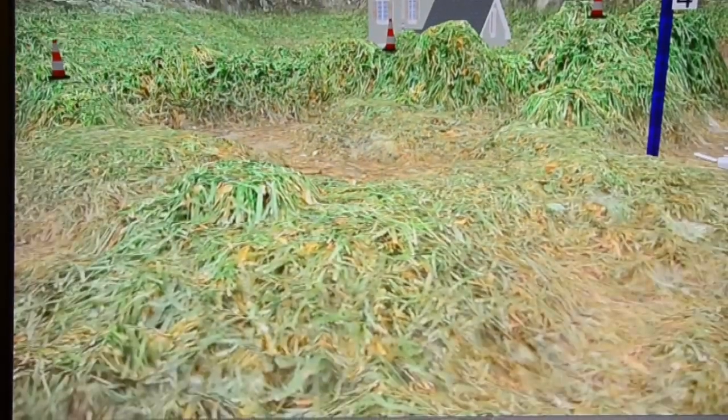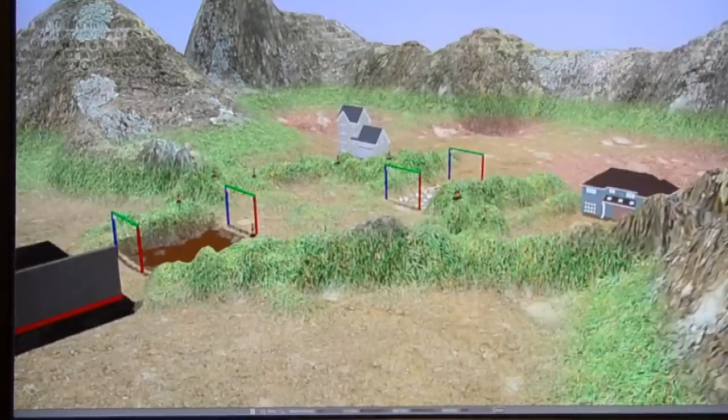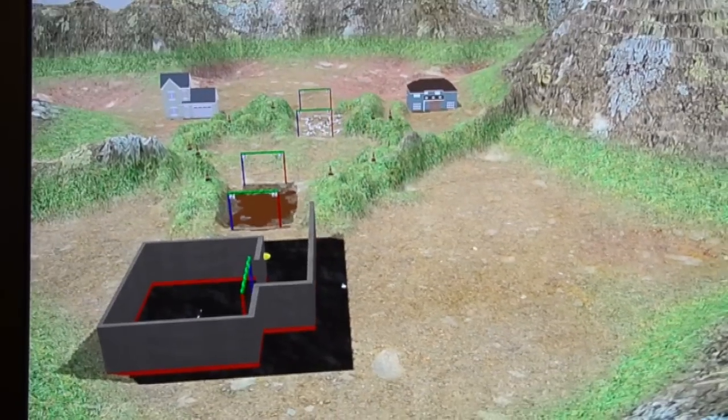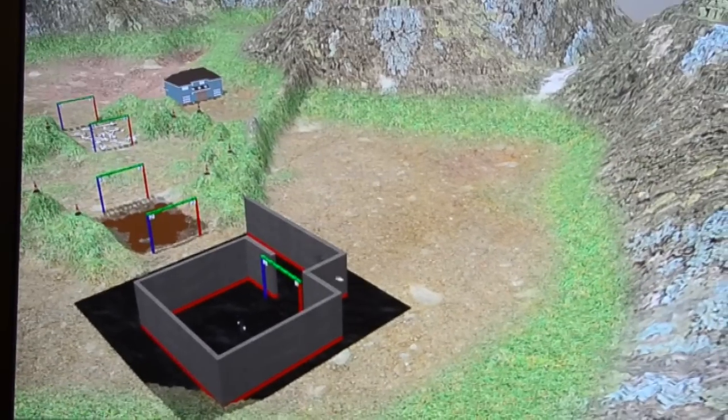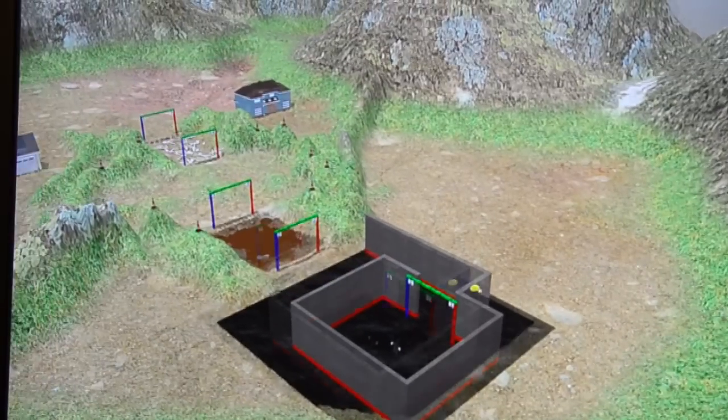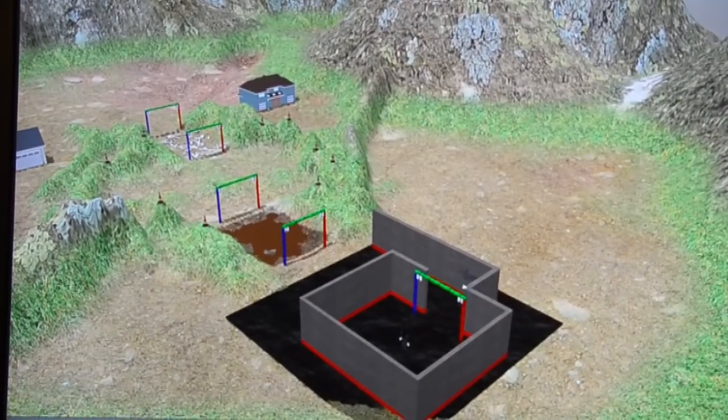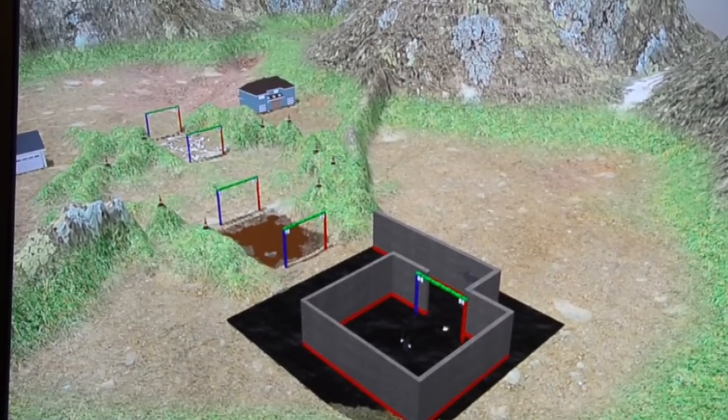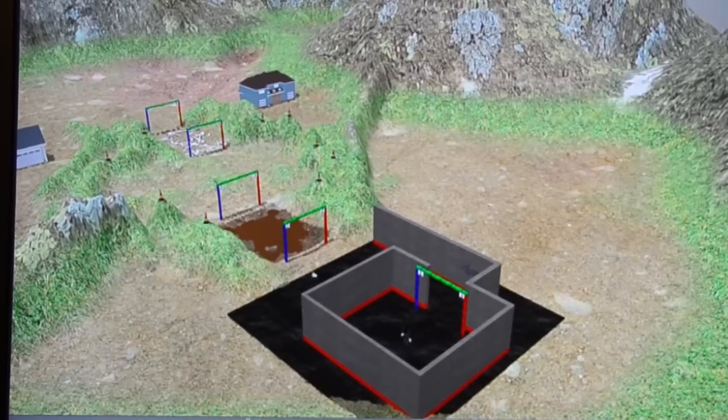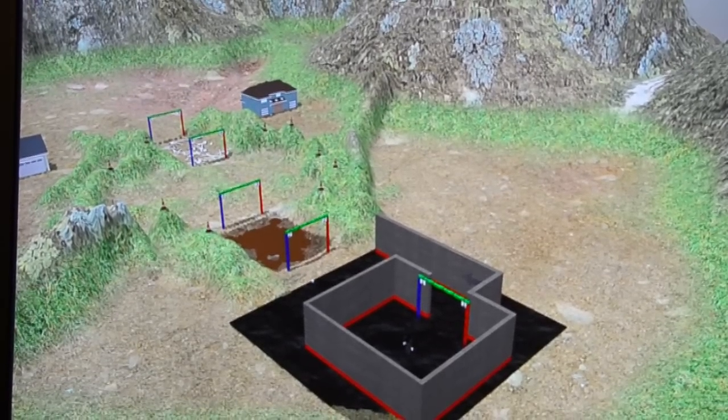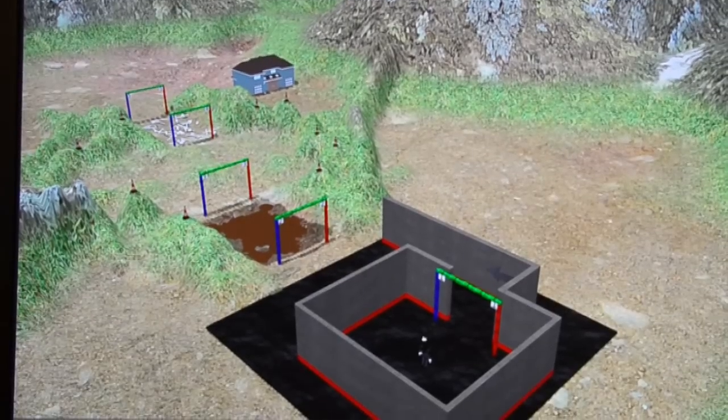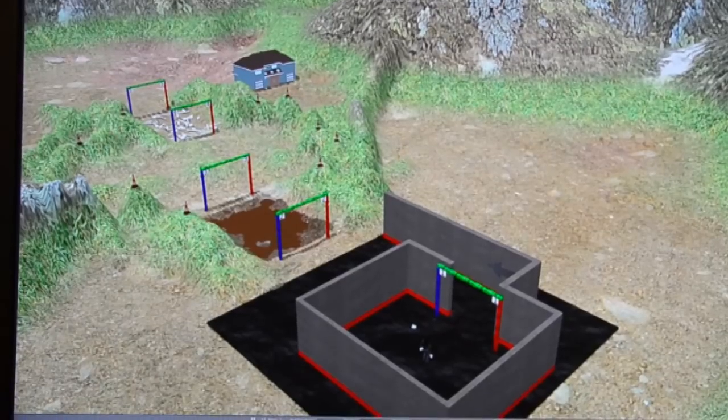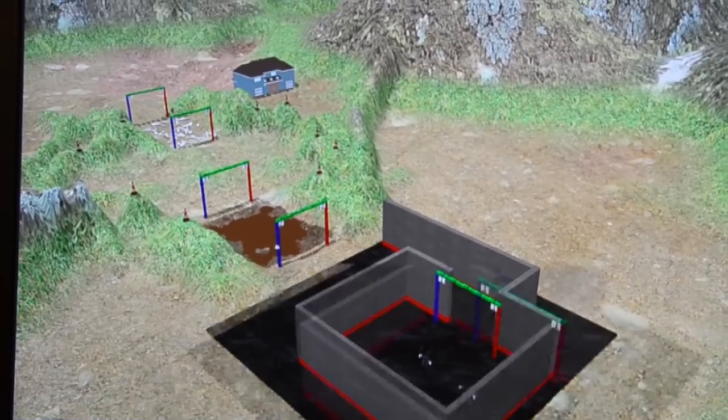This is the second VRC world. The goal here is to walk over different types of terrain. This terrain can be mud, it can be uneven hills, and a rubble pile. So as in the last VRC world, Atlas starts in a pen. It can't see what type of environment it's going to encounter. Time starts once it goes to the gate. In this case, it will first encounter a mud pit that it has to go through, followed by some hills, and then a rubble pile.